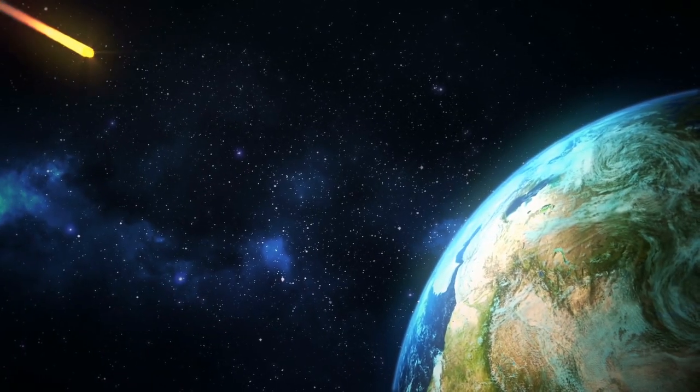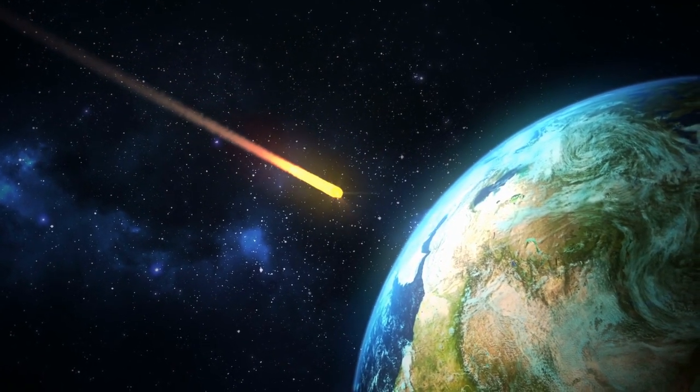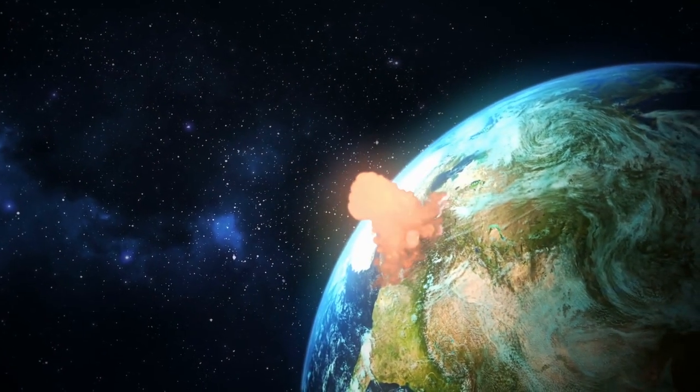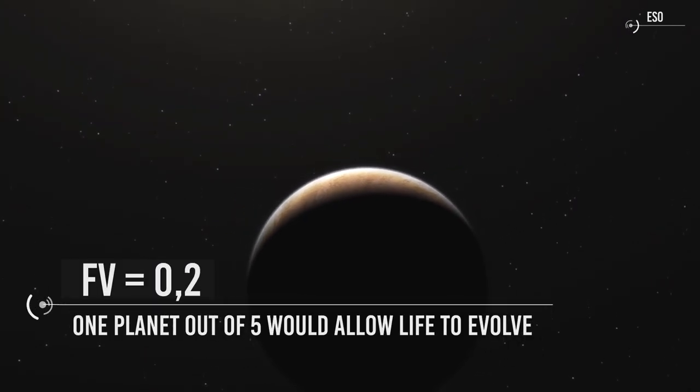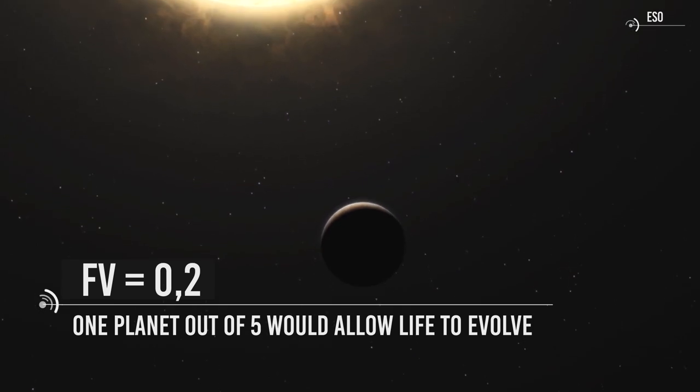Among the former we cannot but think, for example, of the fall to the ground of one or more asteroids, the size of the one that here on Earth is supposed to have abruptly interrupted the existence of dinosaurs. A fairly sensible estimate could lead to a value of 0.2, i.e. one planet out of five would allow life to evolve.